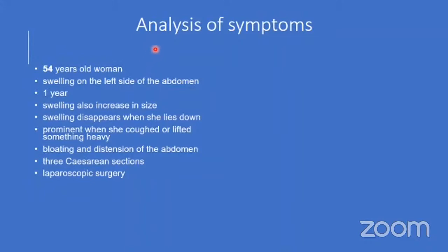Analysis of the symptoms: 54-year-old female, swelling on the left side of the abdomen, progressive for one year, recently increasing in size. Swelling disappears when she lies down and becomes prominent when she coughs or lifts something heavy. Bloating and distension of the abdomen over the last one month. Significantly, she has had three caesarean sections in the early 1990s and two laparoscopic surgeries in the late 1990s.